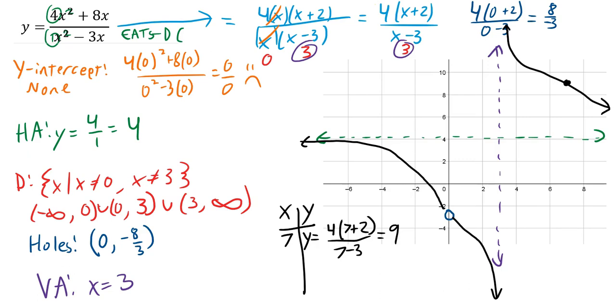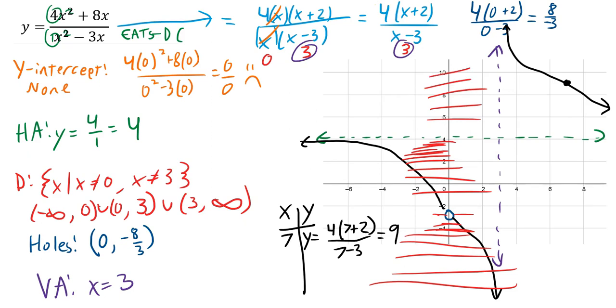Lastly, the range. My range starts at negative infinity and goes up until it hits the hole at y equals negative 8/3. Negative 8/3 is not included in the range. The range continues from negative 8/3 up to 4, which is not included, and then from 4 to infinity.